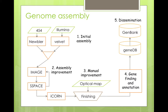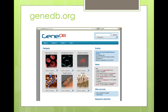Then we went through a stage of manual improvement, where we checked errors and joined things that should be joined together, and made large-scale scaffolding using an optical map. Finally, we did gene finding and annotation, and we disseminated the genomes through GNDB and GenBank. GNDB is a web page and server maintained by the Parasite Genomics Group, where most of our recent genomes are published and updated every 24 hours.